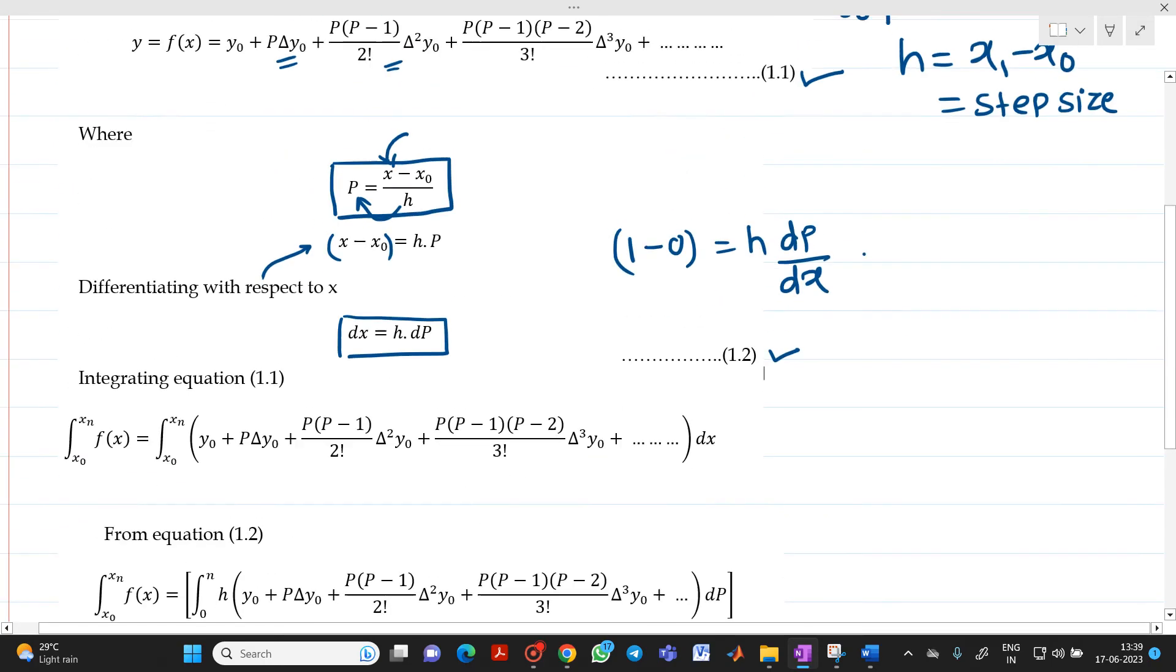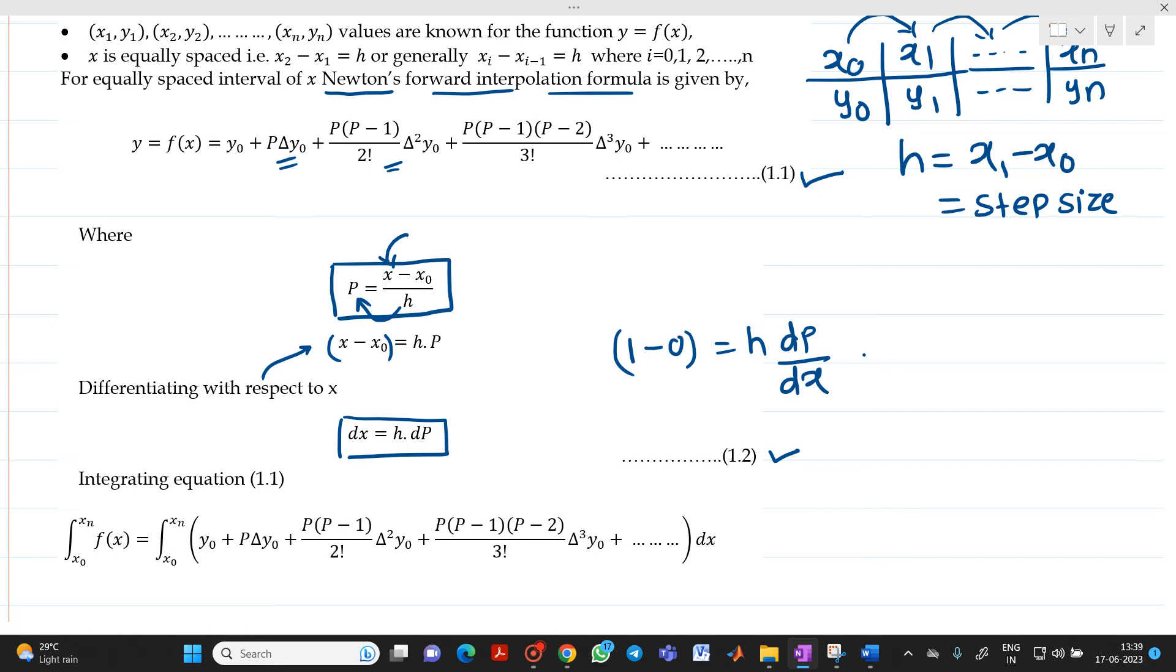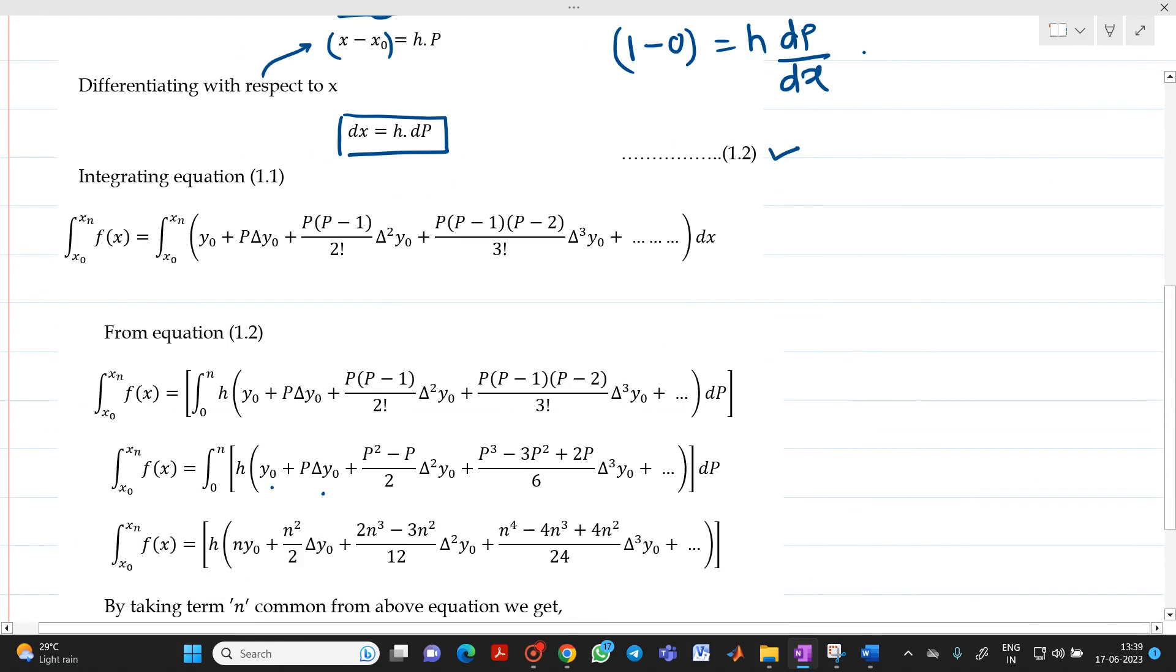Now, we will integrate equation number 1 on both sides. We will be writing integration x0 to xn f of x equal to integration x0 to xn, and write the right hand side of equation number 1 here. The last term will be dx.